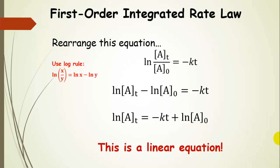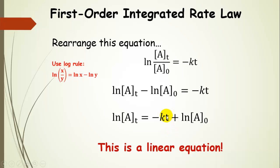Let's rearrange this equation to make it more useful. Using the log rule where the natural log of X divided by Y equals the natural log of X minus the natural log of Y, we get: the natural log of the concentration of A at time T, minus the natural log of the initial concentration of A, equals negative K times T. Rearranging further: the natural log of [A] at time T equals negative KT plus the natural log of the initial concentration of A. This is a linear equation — Y equals MX plus B — with time on the X-axis and the natural log of [A] on the Y-axis.